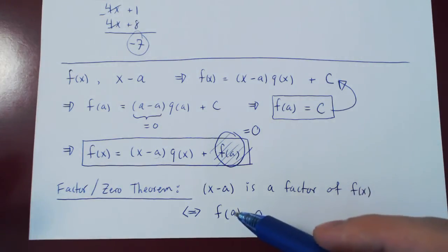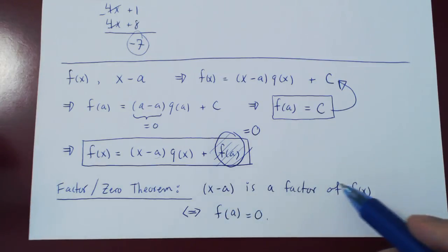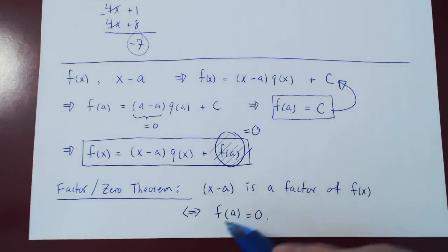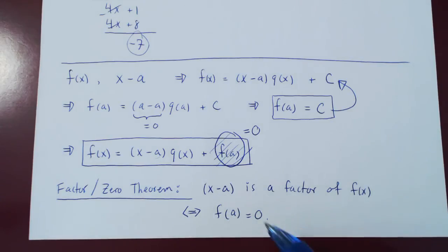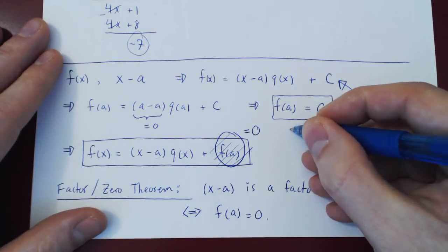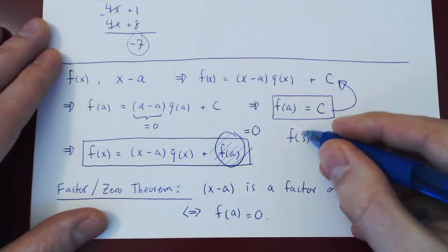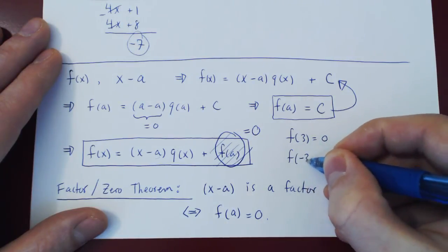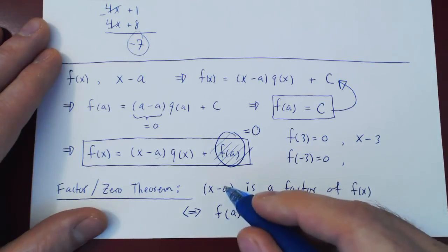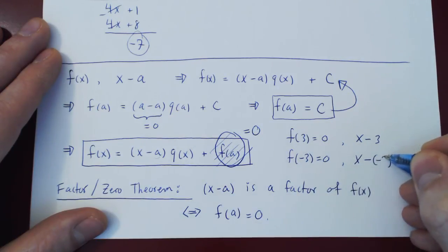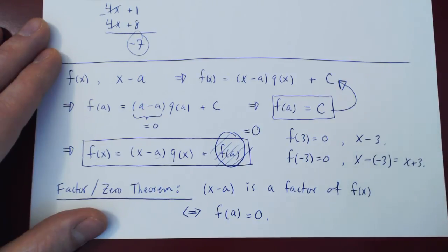We'll usually use the theorem in this direction: we look for a factor of a polynomial, which is often hard to find by inspection. So instead we ask, can we find a value of x where f of that value equals 0? If you find such a value, you automatically get a free factor — x minus that value. For example, if f of 3 equals 0, then x minus 3 is a factor. If f of negative 3 equals 0, then a equals negative 3, so the factor is x minus negative 3, which is x plus 3.